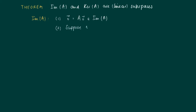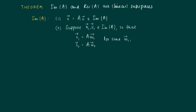Secondly, suppose that we have two vectors v1 and v2 as members of the image of the matrix. Then we know that v1 and v2 are reached through the transformation A times x. So there are w1 and w2 such that v1 equals A times w1 and v2 equals A times w2. We have to show that v1 plus v2 is also a member of the image of the matrix.